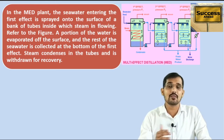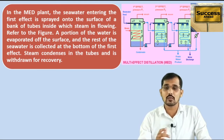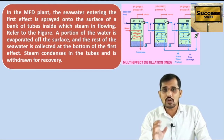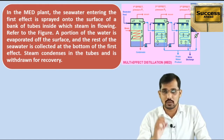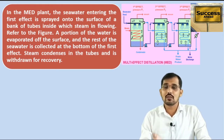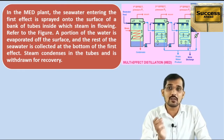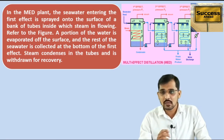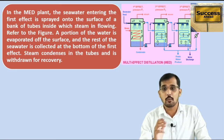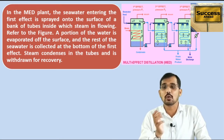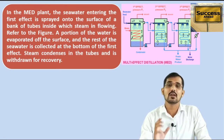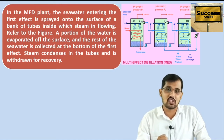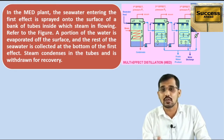In the second and third effects, we are not providing external steam as the heating source. Instead, a portion of the sea water evaporates on the tube surface, and the vapours generated are transferred to the next effect as the heating source. The remaining sea water is collected at the bottom section, and the condensed steam — which is fresh water — is also collected from the bottom.